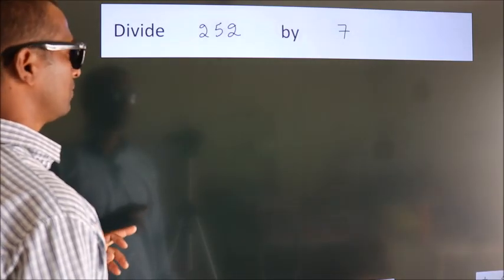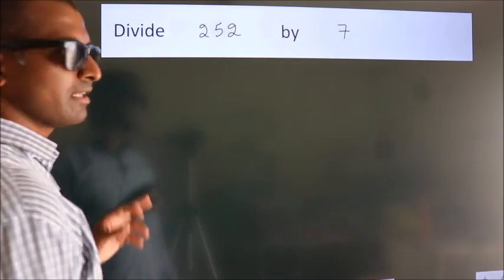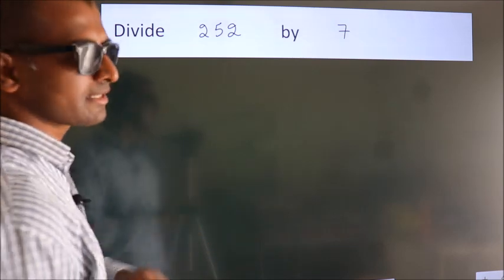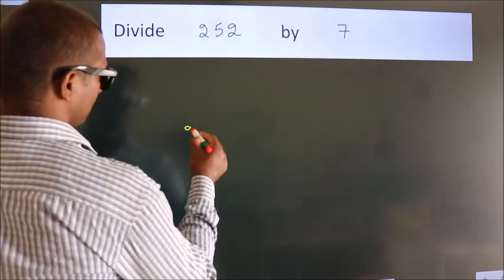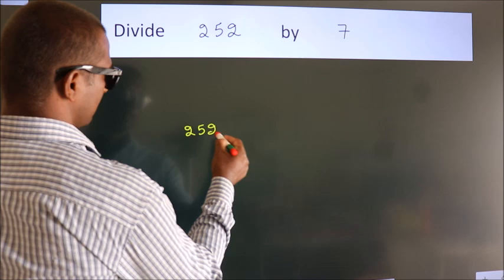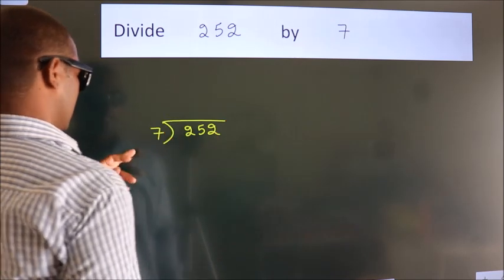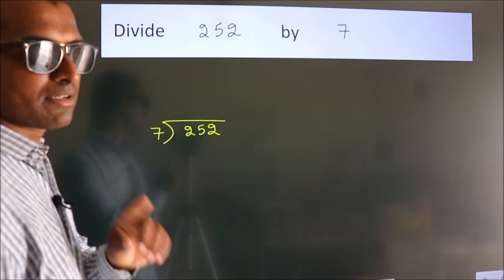Divide 252 by 7. To do this division, we should frame it in this way. 252 here, 7 here. This is your step 1.